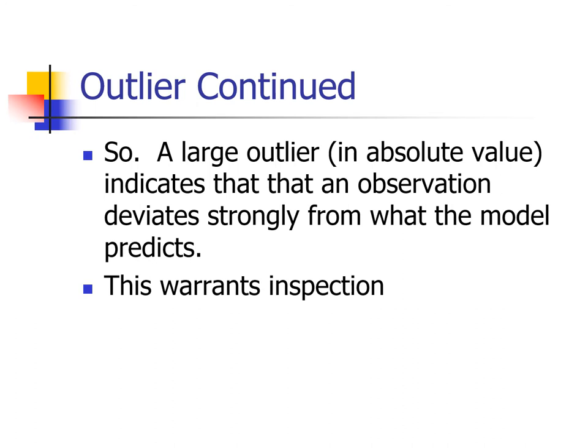When we think of a residual as observed minus predicted, subtraction is a distance operator. The residual measures how far the actual observed value was from what the model predicted based on the explanatory variables. The larger the outlier in absolute value, the stronger the indication that the observation deviates from what the model predicts. A large residual means the observed value was far from the predicted value — that should be a red flag warranting further inspection.